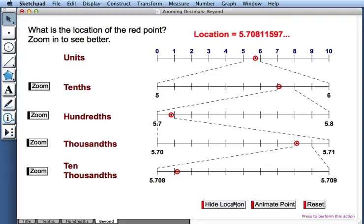In fact, if I press show location, I see the location to quite a few decimal values to the right of zero. So this explains how to use the pair of activities zooming decimals. These activities were inspired by Paul Goldenberg at Education Development Center. And I'll see you later. Thank you.